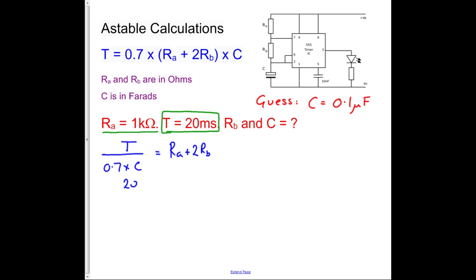So I'm going to put the numbers in and calculate it, so I want 20. Now what does milli mean? Well, milli is one of our units, milli means 10 to the minus 3, so it's 20 times 10 to the minus 3, that's our time, divided by brackets, 0.7 times by our guess value, 0.1 times 10 to the minus 6 equals 1,000, because we were given RA as 1,000 there, look, plus 2RB.